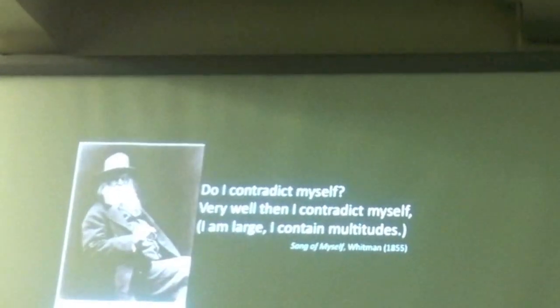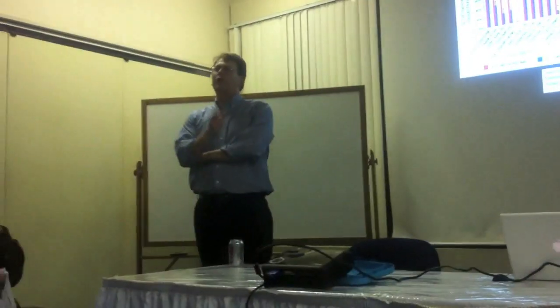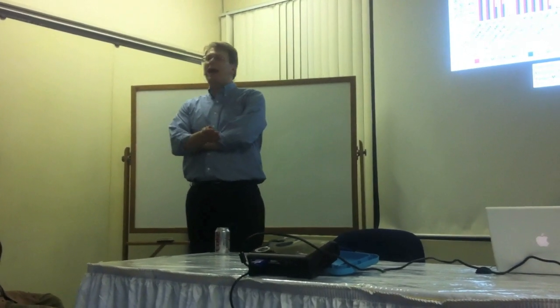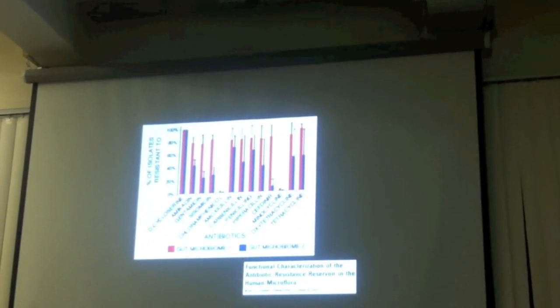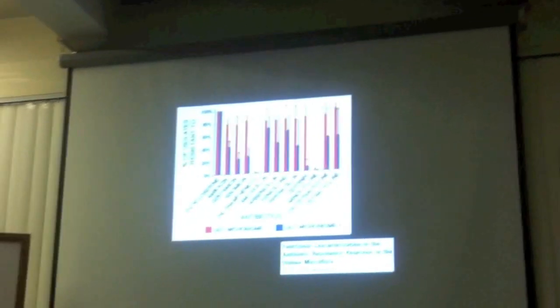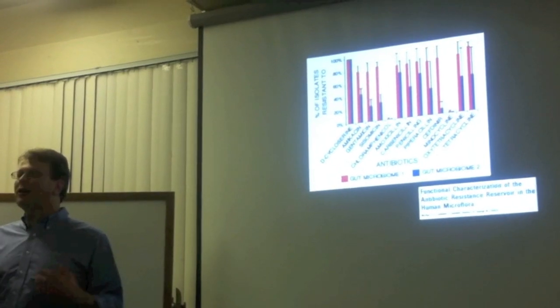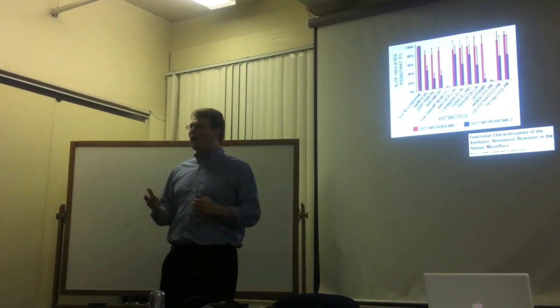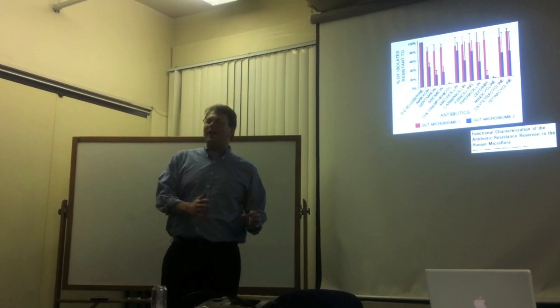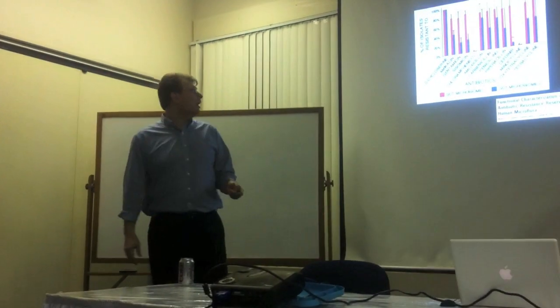There is an NIH-funded project to catalog all these organisms inside the human body and understand how they contribute to human physiology — and an important corollary will be understanding how they contribute to antibiotic resistance. Walt Whitman understood this in 1855 when he said he contained multitudes. If you look in the gut of normal people not receiving antibiotics, just like in the soil, you find genes conferring resistance to nearly all antibiotics inside the gut of every one of us.